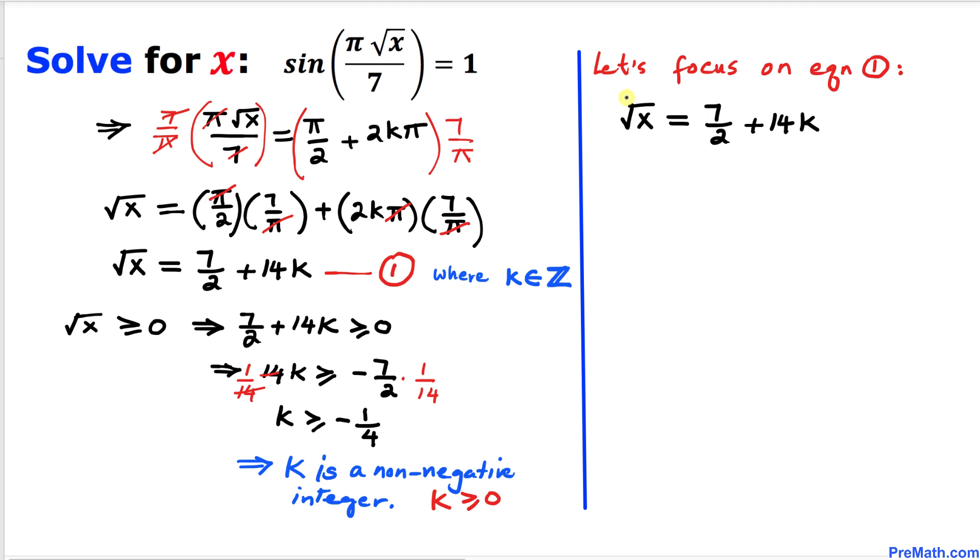Let's solve for x. To remove the square root, I'm going to square both sides. The square and square root cancel.